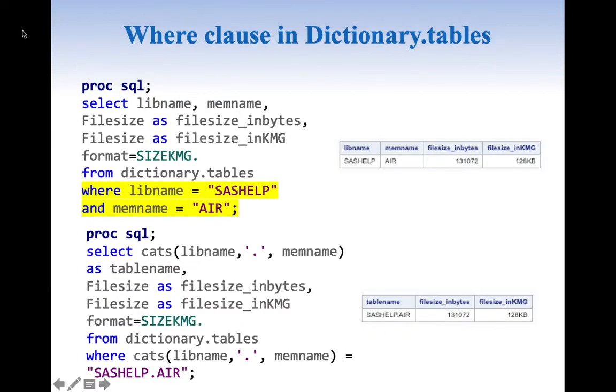We can also use where clause in dictionary.tables just to find a particular table by doing where libname equals sashelp and memname equals air, or just where cats(libname, '.', memname) equals sashelp.air.